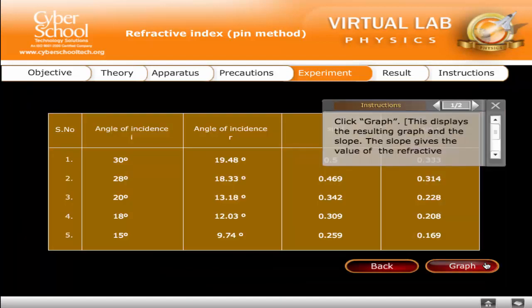Click Graph. This displays the resulting graph and the slope. The slope gives the value of the refractive index of the material of the glass block.